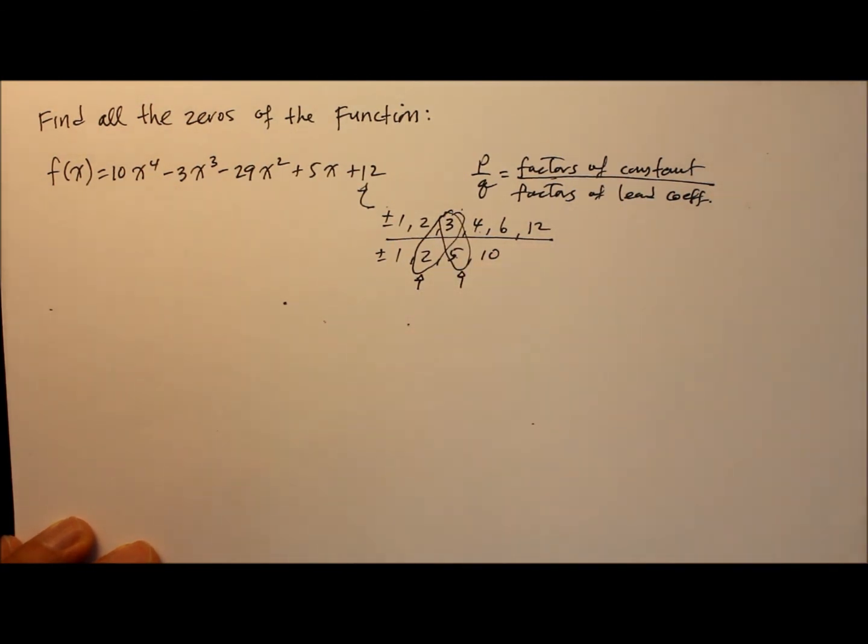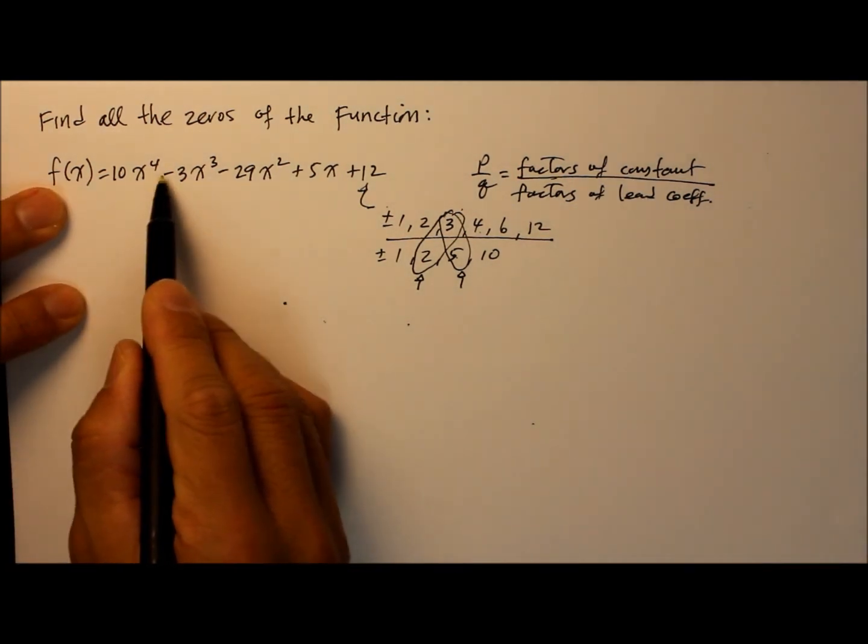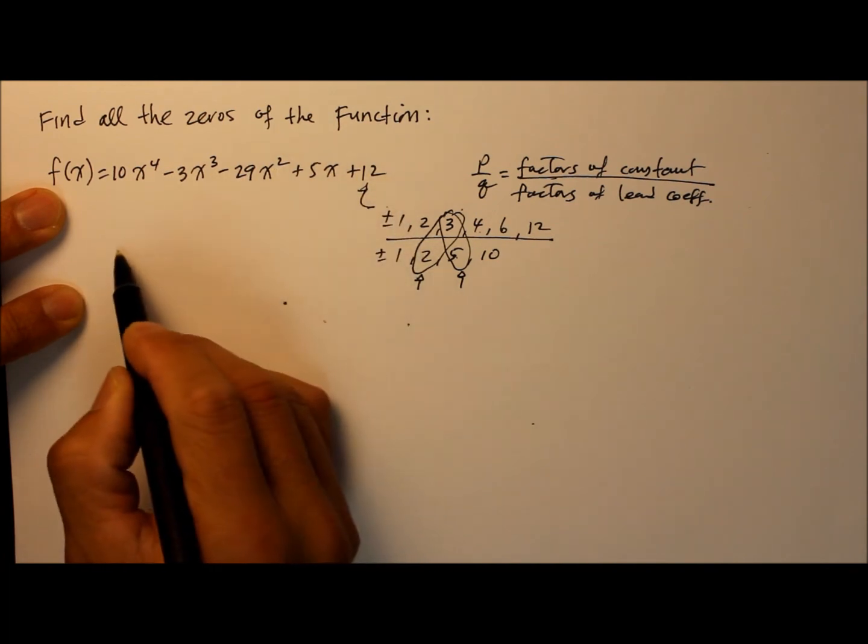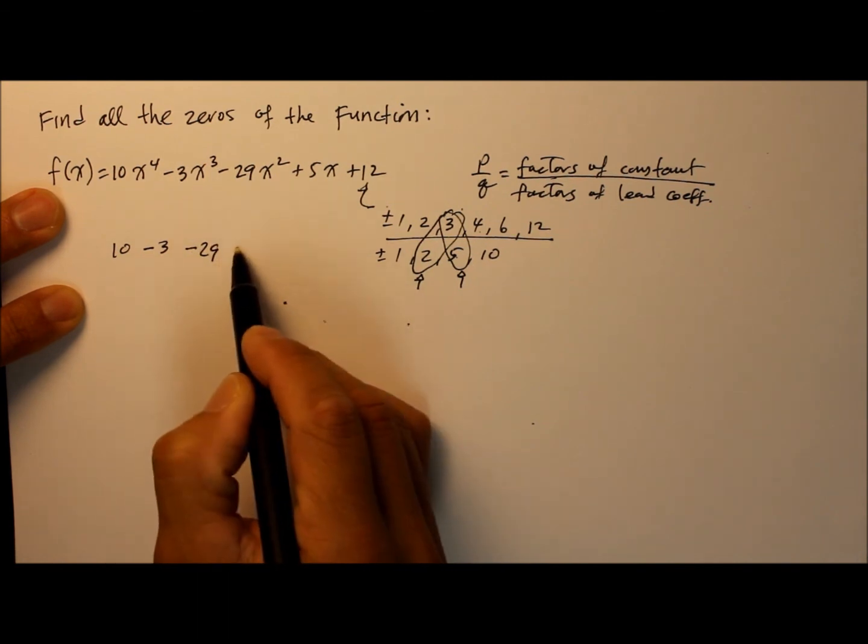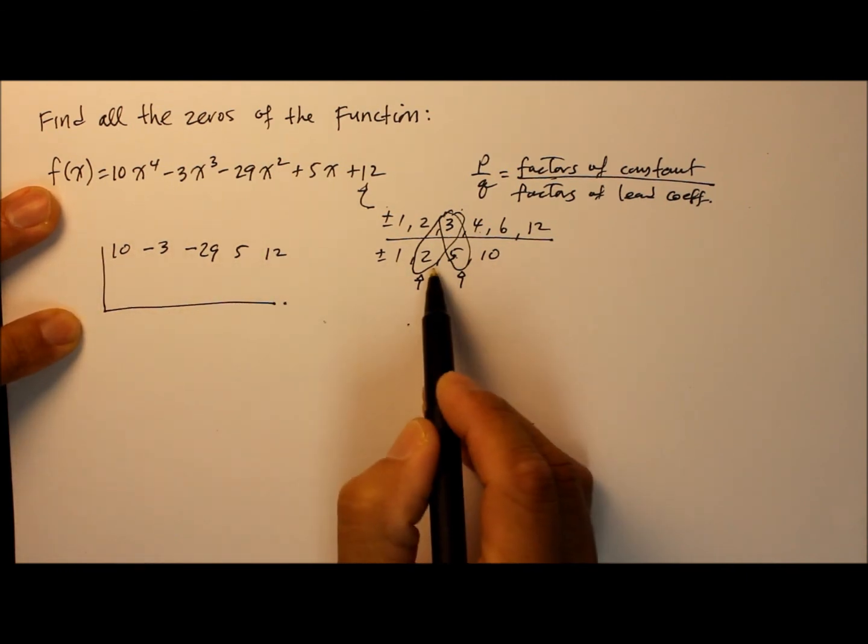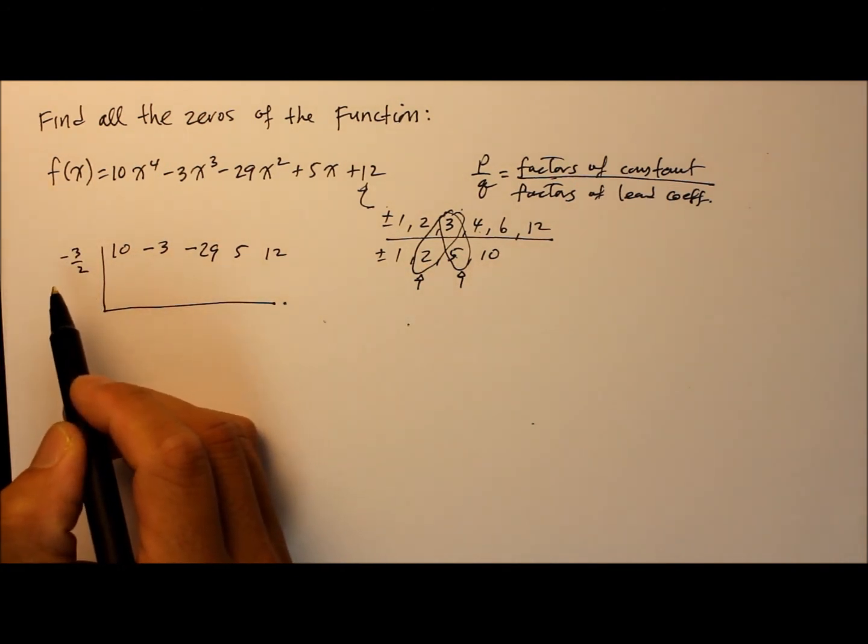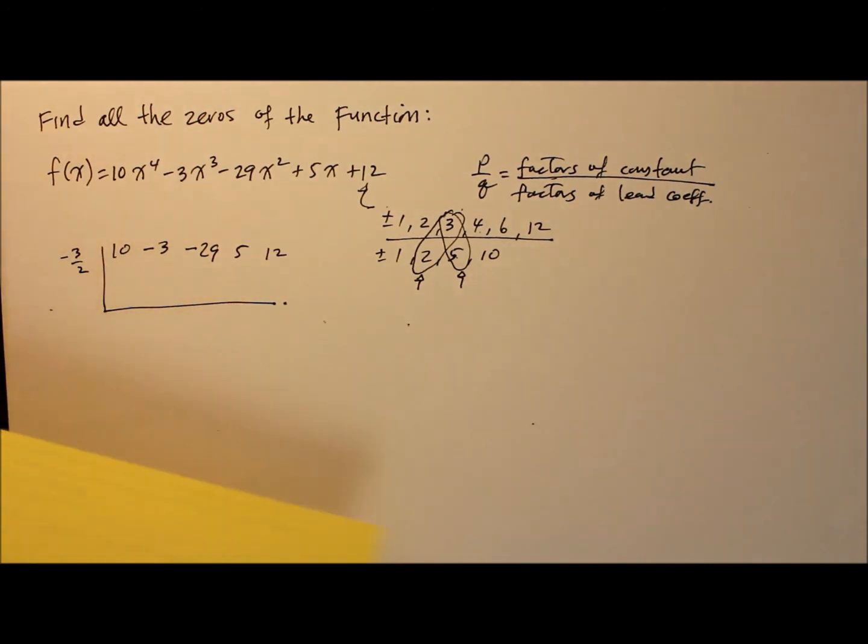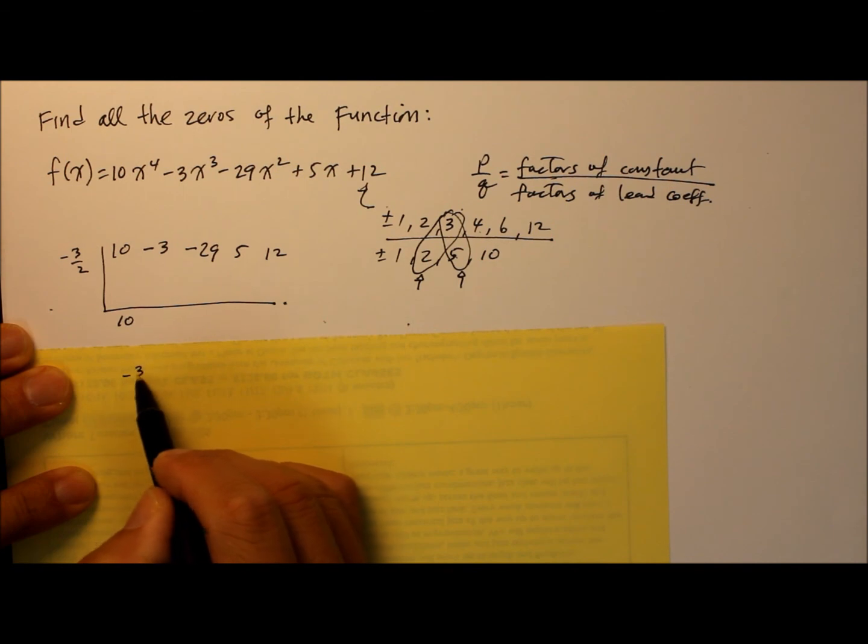So we're going to use synthetic division. All the leading coefficients, making sure they're in degree of sequential order. We got 10, minus 3, minus 29, plus 5, and finally the constant 12. Divide that whole thing by the first test point, negative 3 over 2. So first thing we do is bring down the 10, the leading coefficient, and multiply negative 3 over 2 by 10.